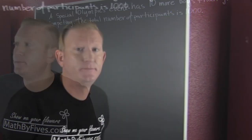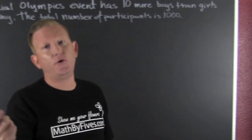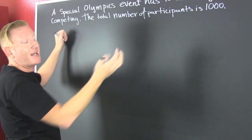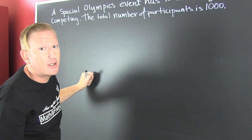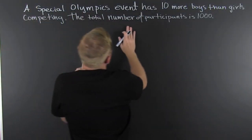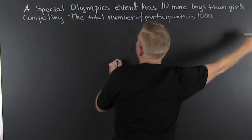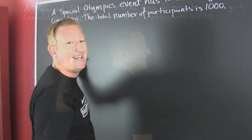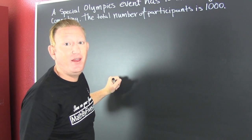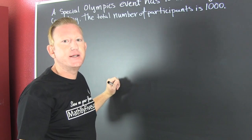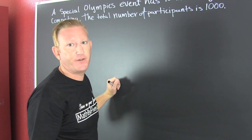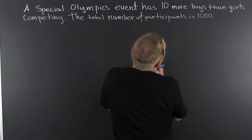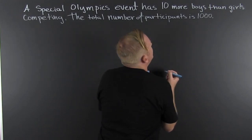We have a special word problem. I took this straight from the book. The Olympics has ten more boys than girls competing, and the total number of participants is one thousand. Let's work with that first statement: a special Olympics event has ten more boys than girls. How do we write that?